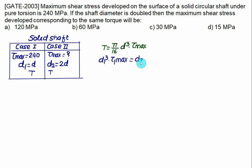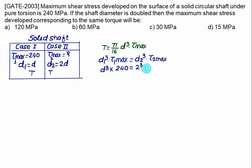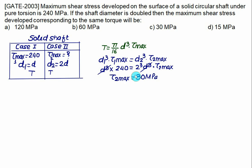For a solid shaft, T = (π/16) × d³ × τ_max. Since torque is constant, d1³ × τ1 = d2³ × τ2. Substituting: d³ × 240 = (2d)³ × τ2. The d³ terms cancel and 2³ = 8, giving τ2 = 240/8 = 30 MPa. Choice C is correct.